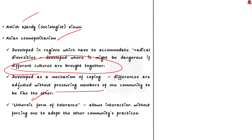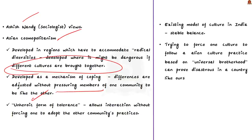This unheroic form of tolerance allows interaction without forcing one to adopt another community's practices. Bringing Universal Civil Code will affect this ecosystem. The author fears UCC may affect this harmonious coexistence and unheroic form of tolerance. The author finally concludes by saying the existing model of culture in India has a stable balance based on mutual respect, and trying to force one culture to follow an alien cultural practice based on universal brotherhood can prove disastrous to the country.